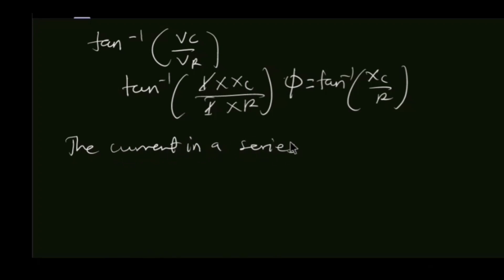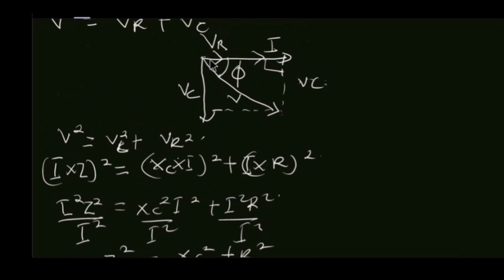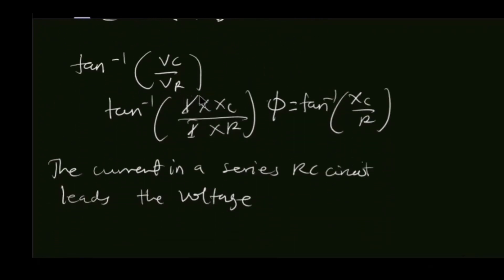In a series RC circuit, the current leads the voltage. You can clearly see from our phasor diagram of VC and VR that the current is leading the voltage by a phase difference of theta. So in any RC circuit, the current is always leading the voltage by phi, and phi is calculated as tan inverse of Xc over R. Thank you for being with me in this class — see you in the next class as we talk about the combined series RLC circuit containing resistors, inductors, and capacitors.